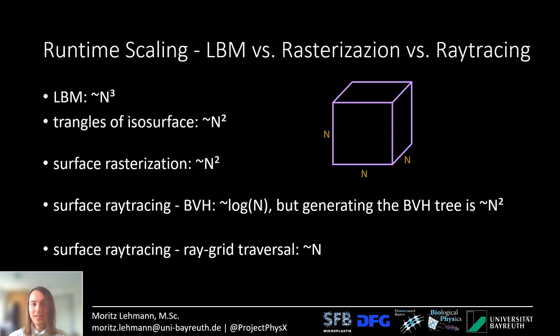There's a much faster approach than BVH called ray grid traversal. It works because the Lattice Boltzmann method already works with a grid, so you can reuse this grid as an acceleration structure for ray tracing. Ray grid traversal scales with only n. So if you blow up the simulation box, you will first run into performance issues with Lattice Boltzmann, then with surface rasterization, and lastly with surface ray tracing.